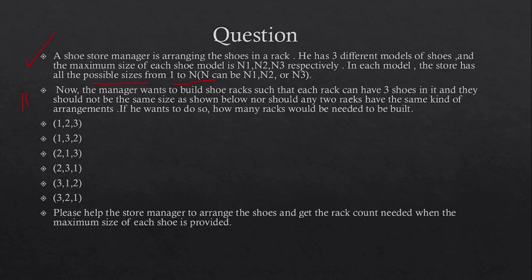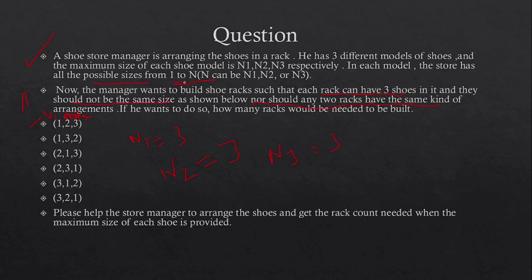There are three important points: first, each rack can have three shoes; second, the shoes in a rack should not be the same size; third, no two racks should have the same arrangement. For example, with n1=3, n2=3, n3=3, the store has all possible sizes from 1 to n for each model.